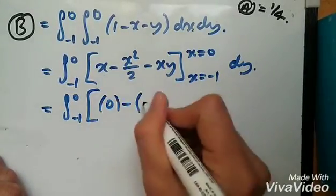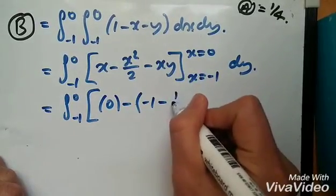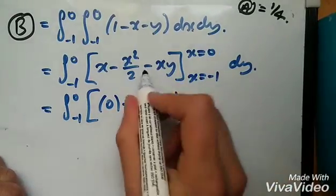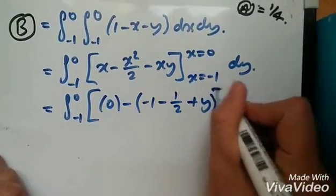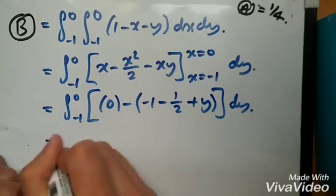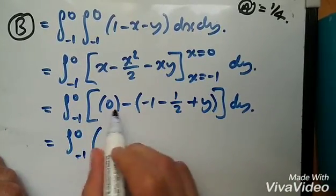Now pop in -1. You're going to get -1 here, -1², which is half. Minus times this would be plus y, and then dy. Tidying up this equation, we should get...